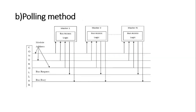Next is the polling method. The polling method uses the same bus request and Bus Grant lines, but you can see three address lines. You can see three address lines when you have eight devices. If you have eight devices, eight means two to the power three.